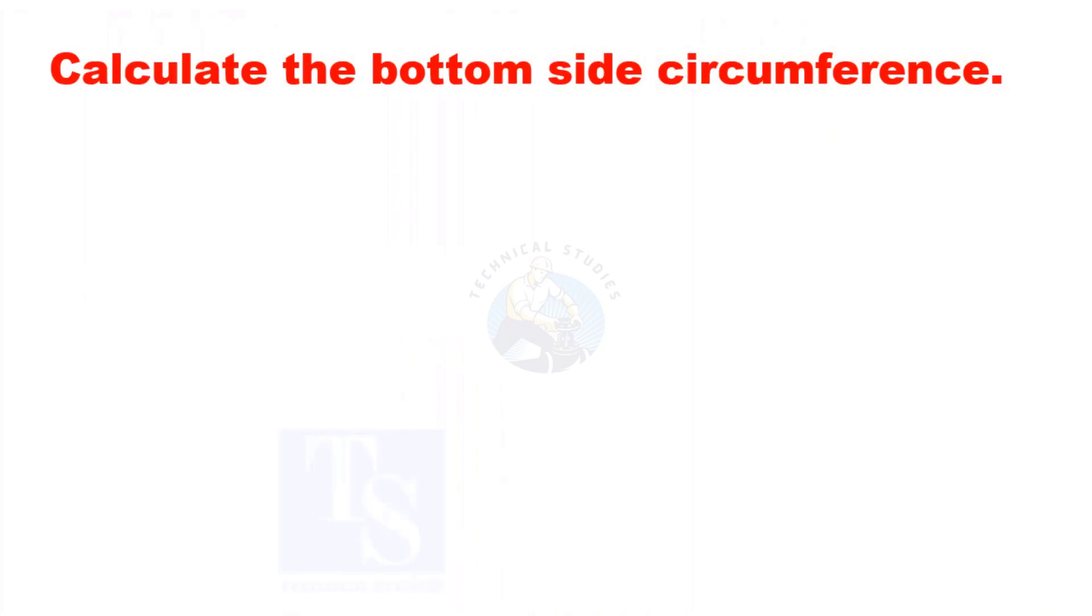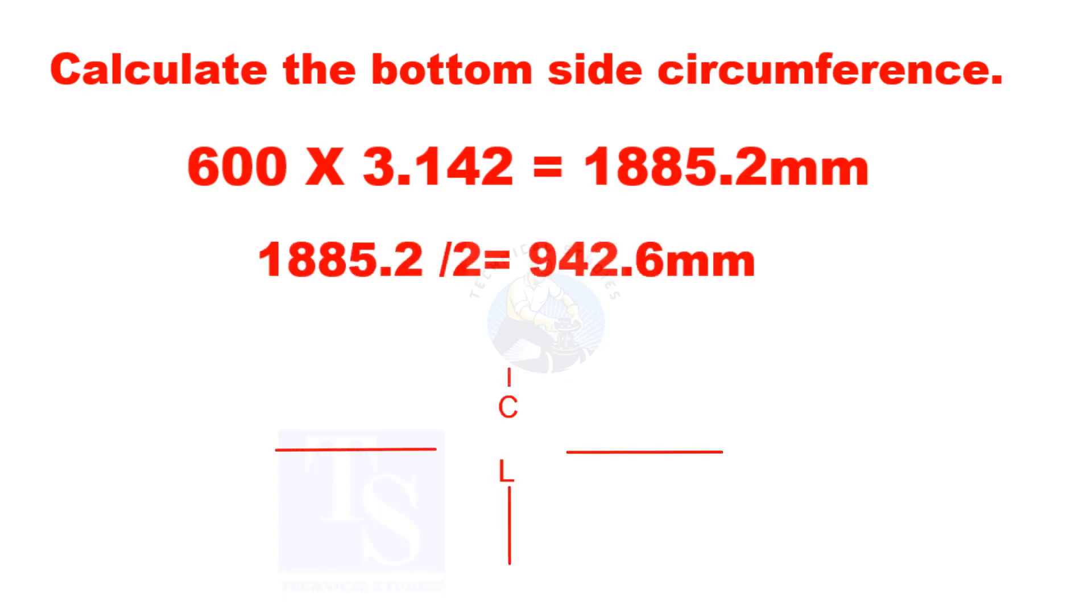Let us calculate the bottom side mean diameter circumference. Divide the circumference by 2 and mark the length on both sides. If required, you can mark the full length to one side.